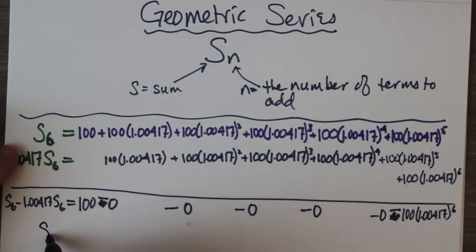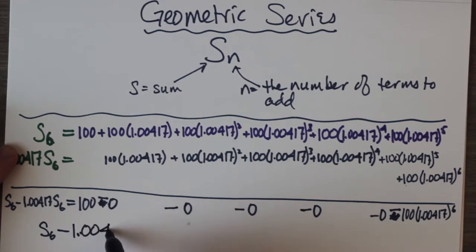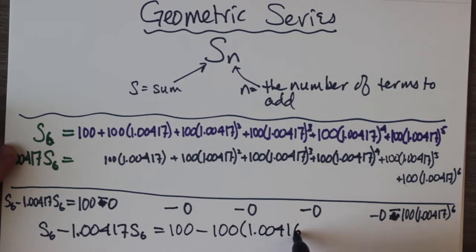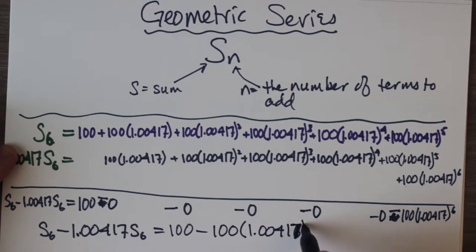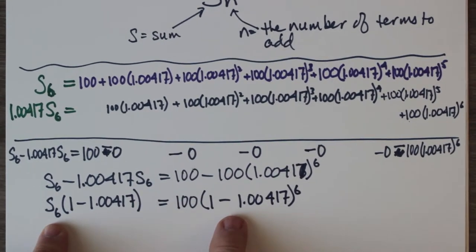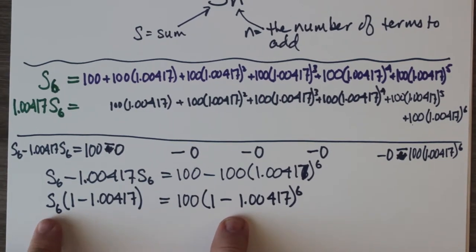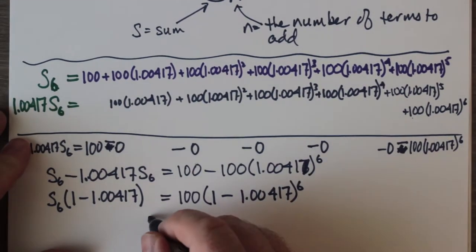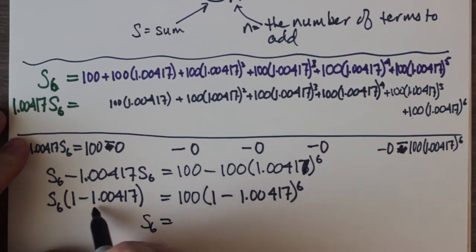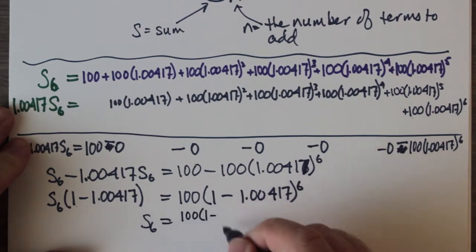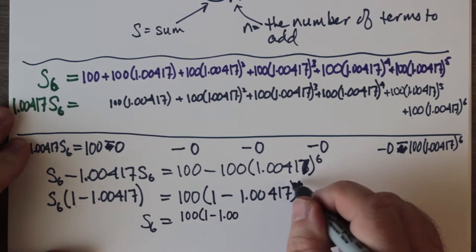If I give myself more room here, S6 subtract 1.00417 S6 is really equal to 100 take away 100 times 1.00417 to the power of six. Now let's factor. I can factor S6 out of here because it's common on this side. I get S6 outside of one minus 1.00417. And over here, 100 is common. I can factor out 100 from that, and I have 1 minus 1 times this number raised to the sixth: 1.00417 raised to the sixth.